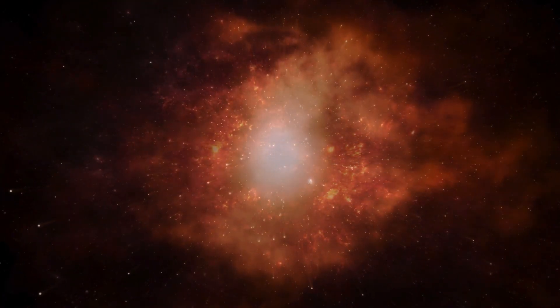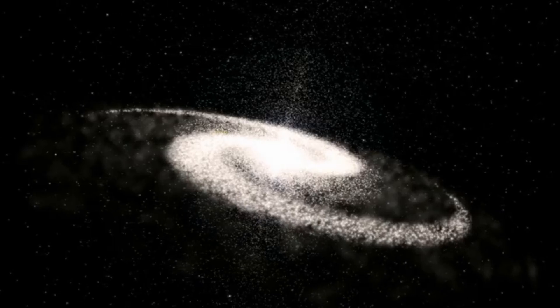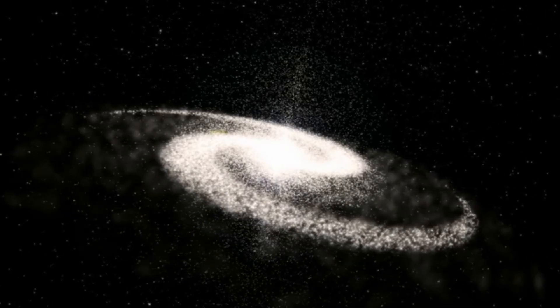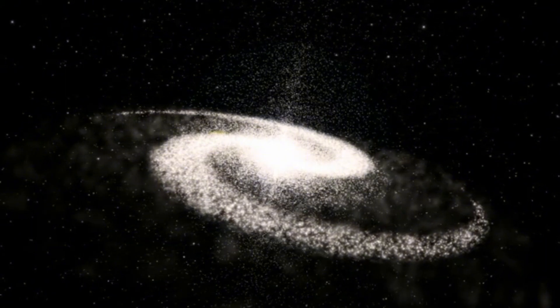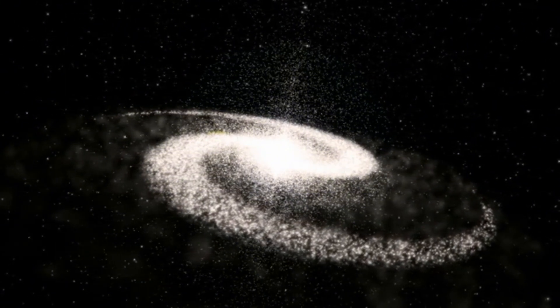Webb's revolutionary technology has enabled astronomers to directly image exoplanets for the first time. In September 2021, Webb captured the first-ever direct image of an exoplanet, revealing the presence of HIP 6544-26b, a massive gas giant located 1,000 light-years away from Earth.